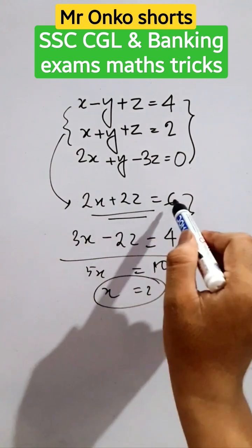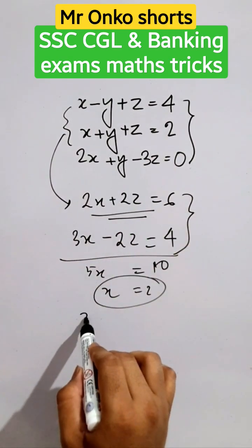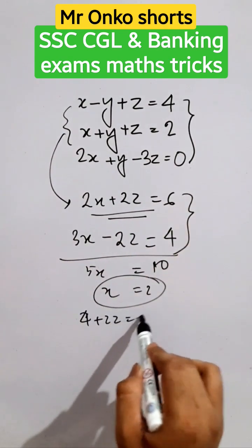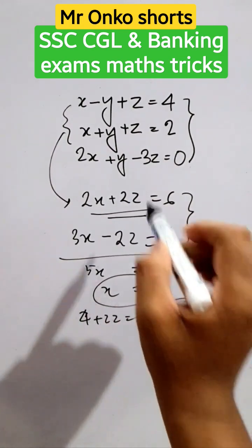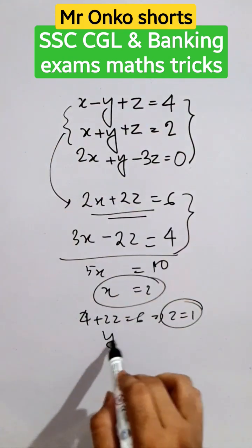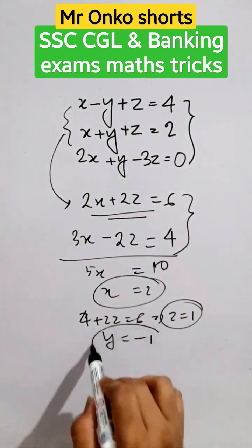From here, z equals 1. Now putting 2 and 1 into this equation, y equals minus 1.